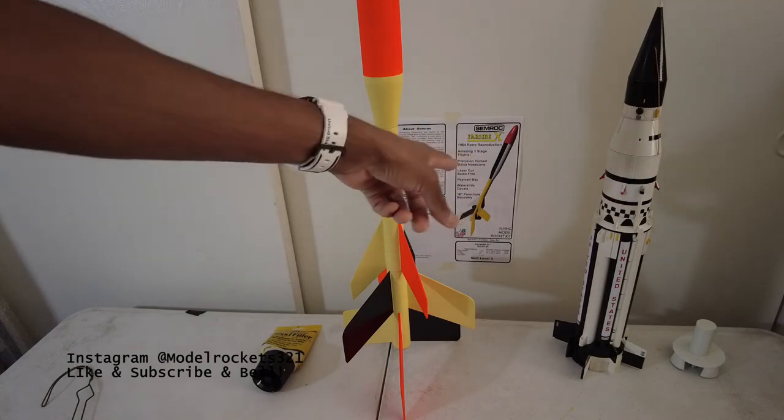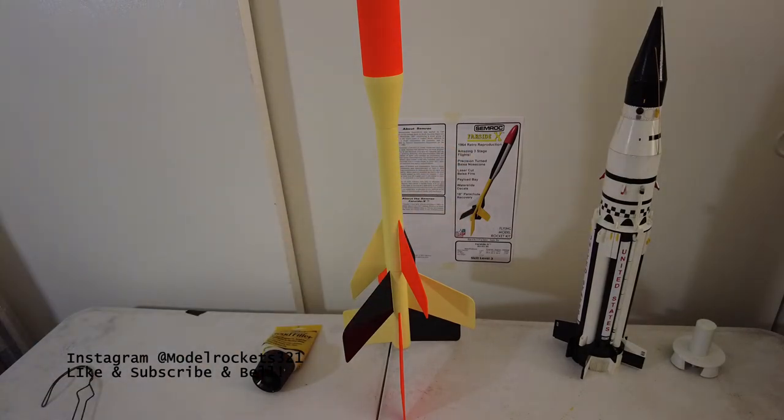As you can see back there on the wall, the Semroc poster or picture is hanging. That's the card, a little badge card. And Saturn 1 SA-5.